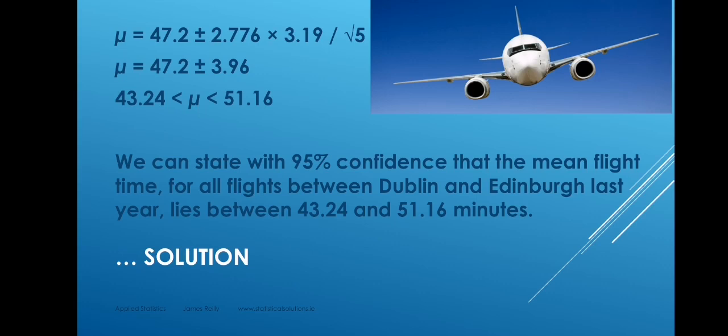In words, we can state with 95% confidence that the mean flight time for all the flights between Dublin and Edinburgh last year lies between 43.24 and 51.16 minutes. Notice that we are making a statement about mu, the population mean — not about how long a particular flight took, but what was the mean flight time of all the flights. We drew a sample from last year's flight times, so we're making a statement about last year only, and we specify the population: all flight times between Dublin and Edinburgh last year.